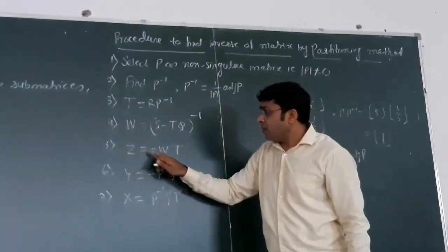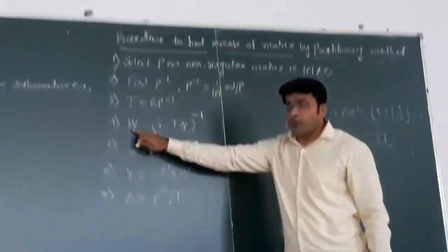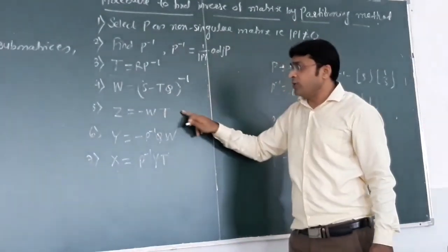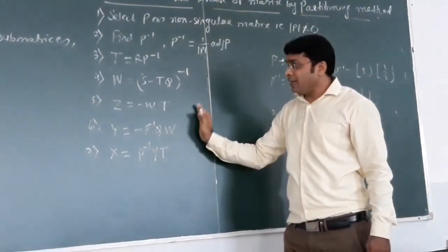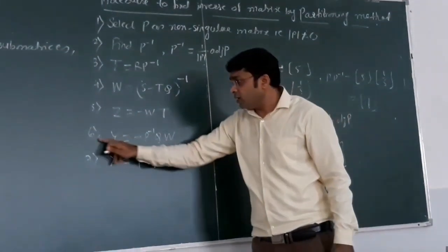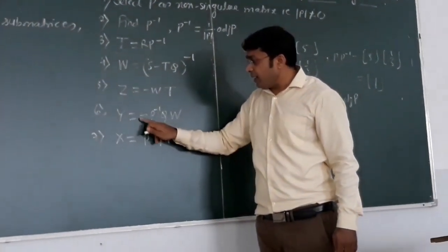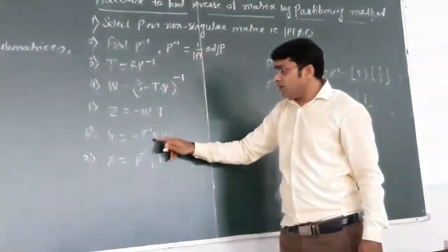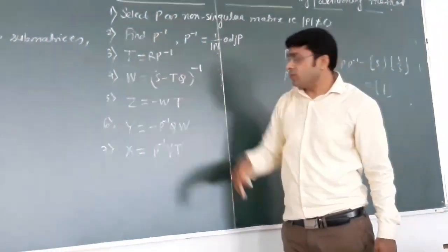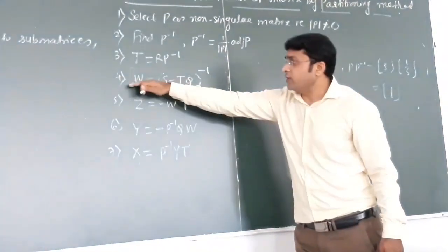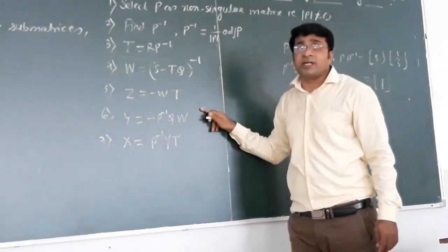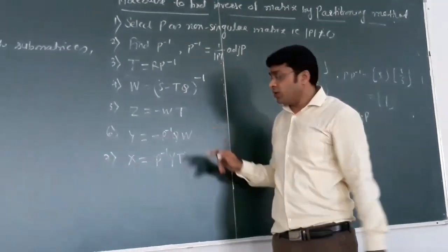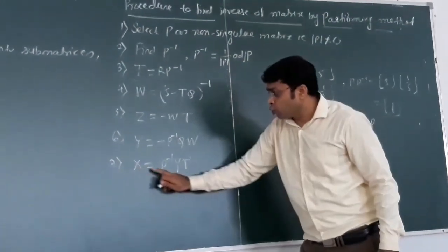Then after that, Z is nothing but minus W into T. W we have found and T we got in the first step. Then Y equals to minus P inverse Q W. P inverse we have got, Q is from the partition, and W we just found. Just take the multiplication of three matrices. This can be done manually or you can calculate in calculator as well.